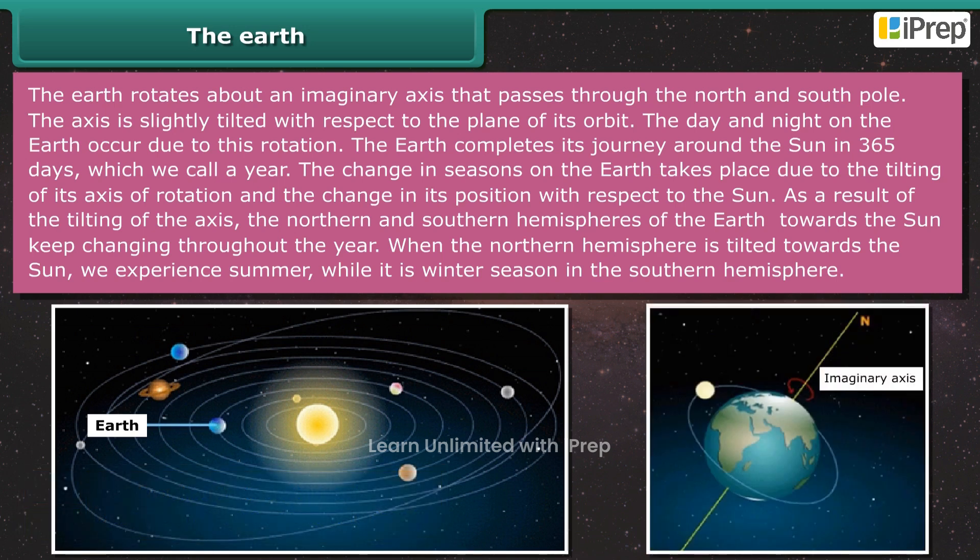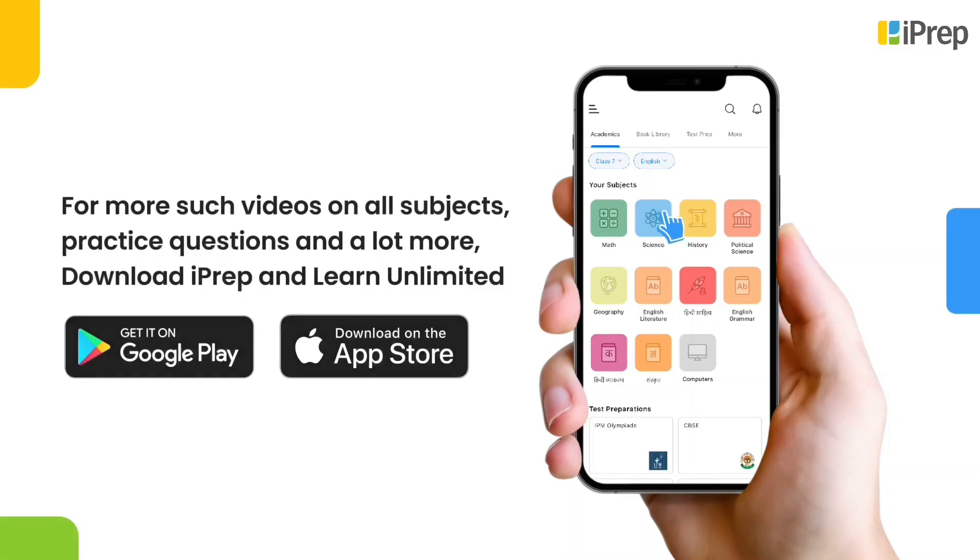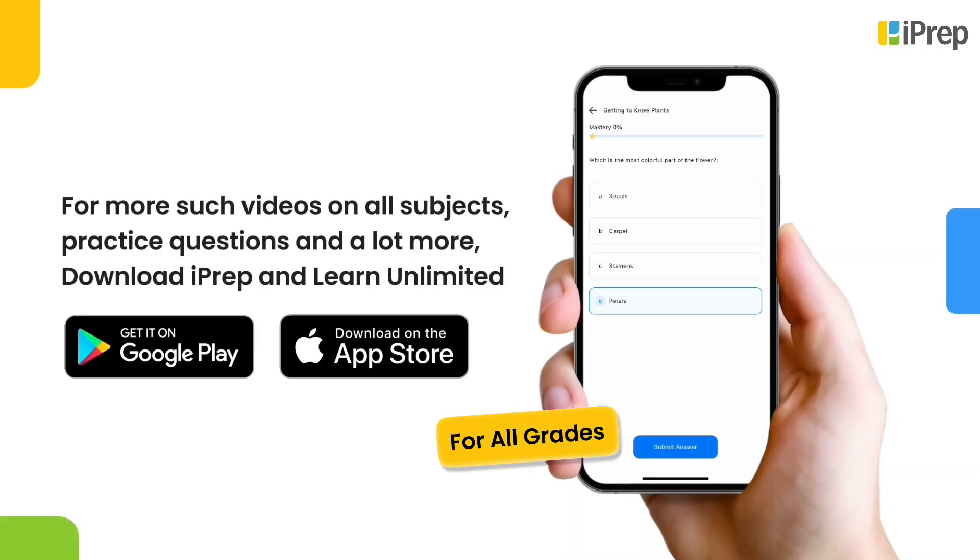As a result of the tilting of the axis, the northern and southern hemispheres of the Earth towards the Sun keep changing throughout the year. When the northern hemisphere is tilted towards the Sun, we experience summer, while it is winter season in the southern hemisphere.